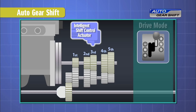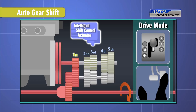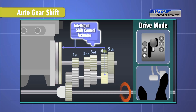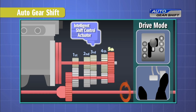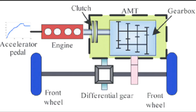The AMT is actually a regular manual gearbox but with the addition of an electro-hydraulic system which comprises of an electronic control unit and a hydraulic system. This system, which is also known as the transmission control unit or TCU, monitors parameters like accelerator pedal position and vehicle speed among others, and controls the hydraulic operations which changes the gears automatically without the driver needing to use a clutch.